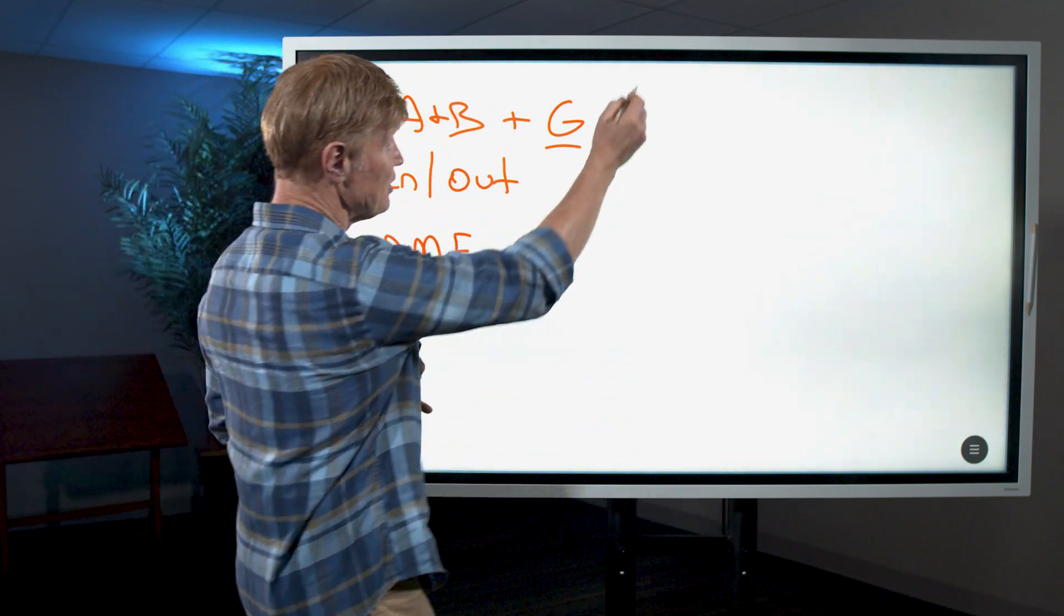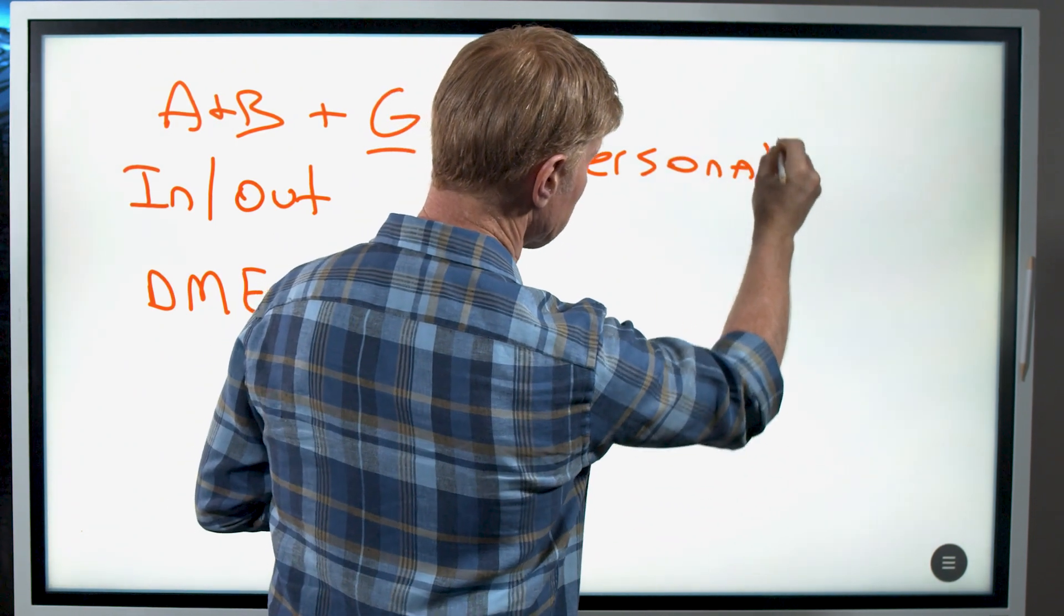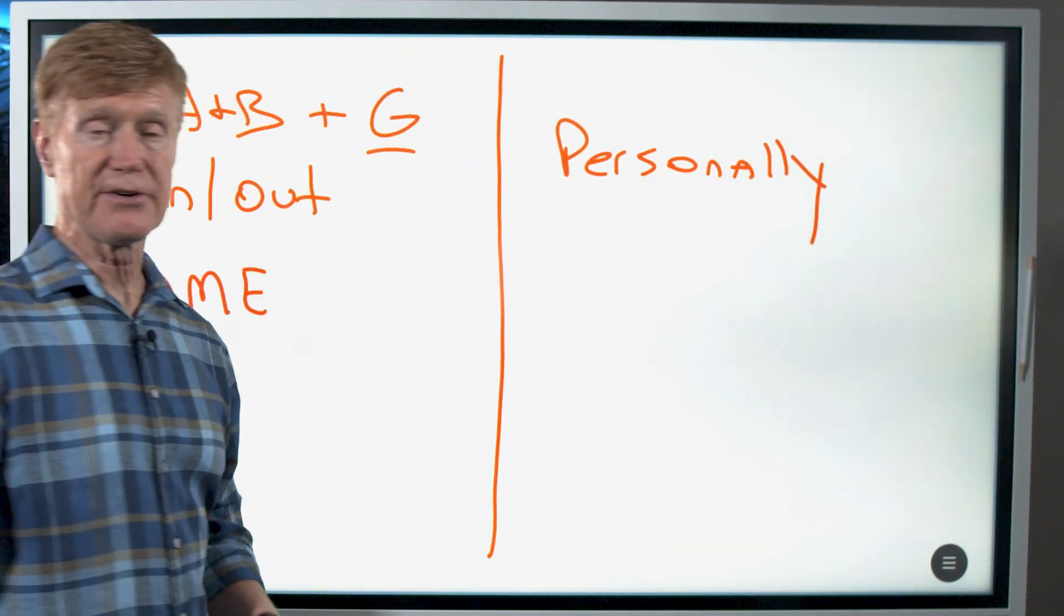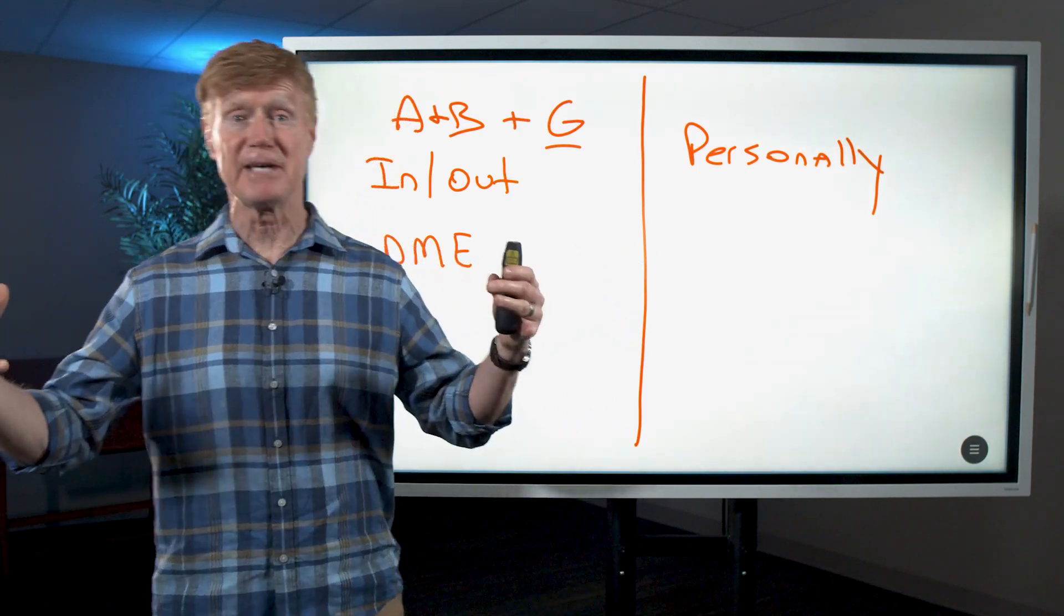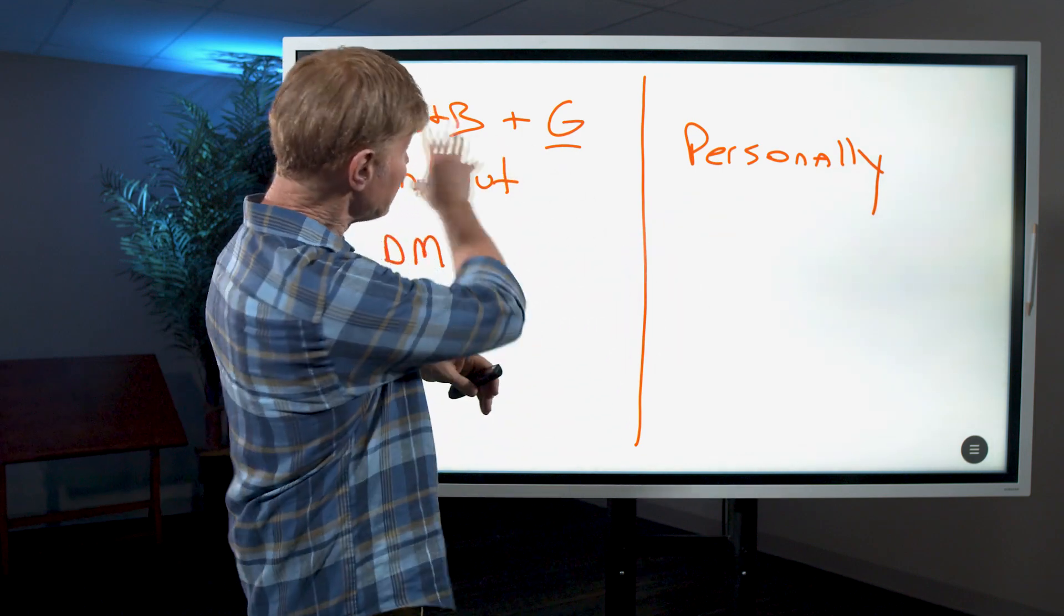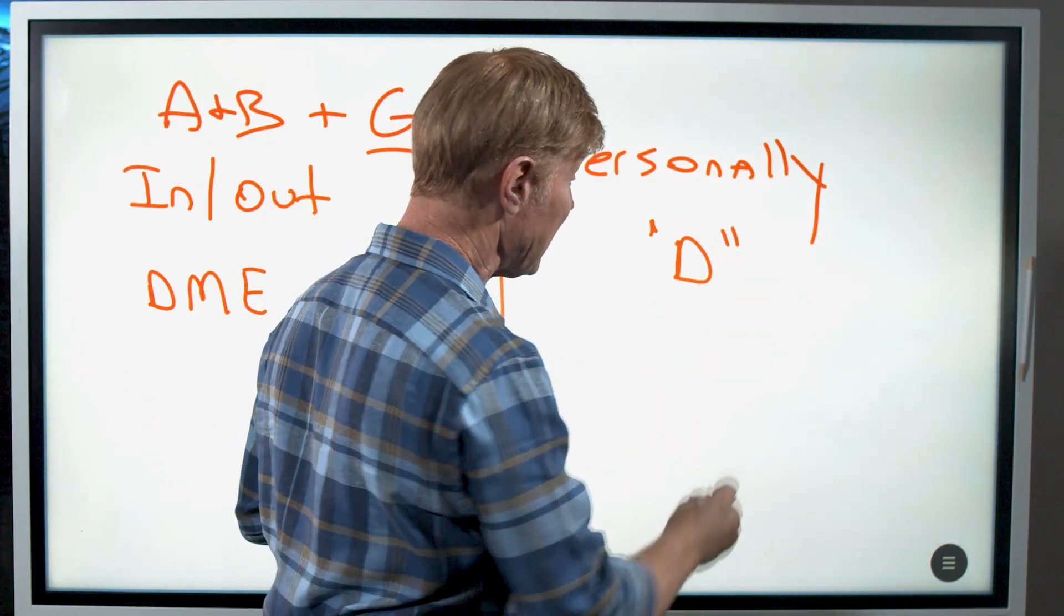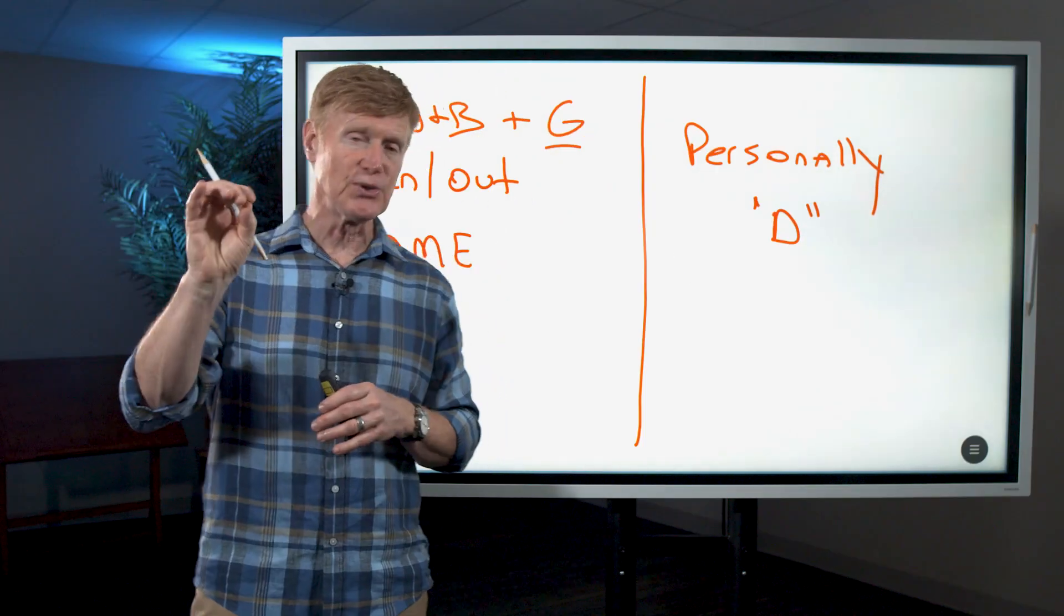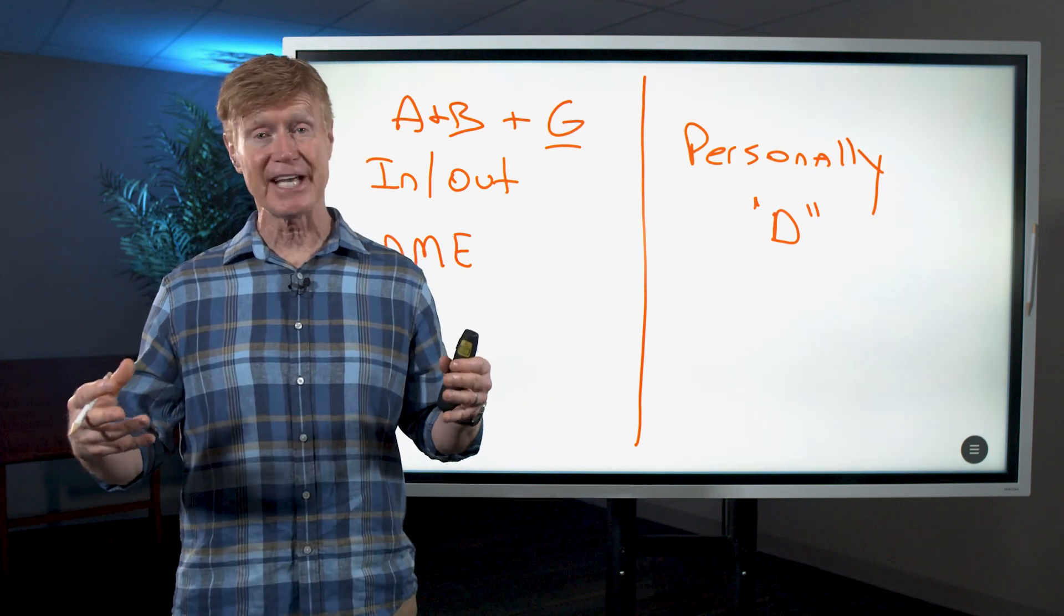Now the second way in which we have medications, these are the ones that we personally administer. This is going to be your high blood pressure, your cholesterol medication, your heart medications, those kind of things that you're taking. These are personally administered, they will not be covered by your plan G or Medicare A and B. They'll be covered by your drug plan, and that's why it's very important to make sure you get the right prescription drug plan based upon the medications that you're going to take.